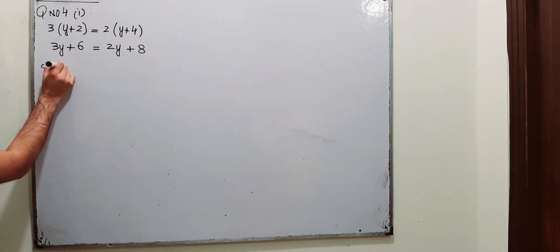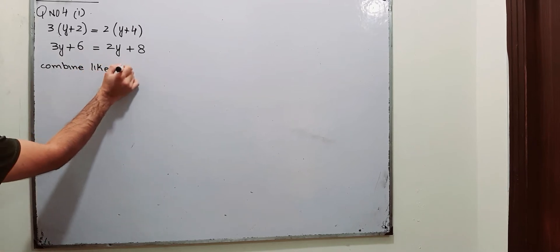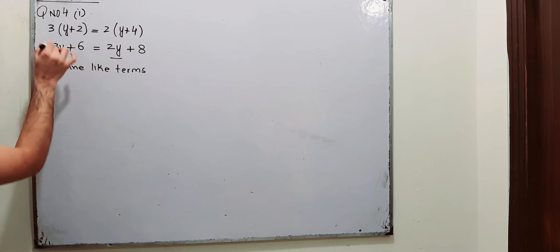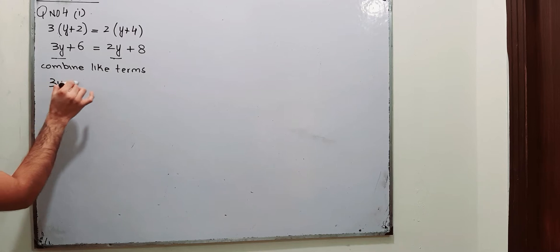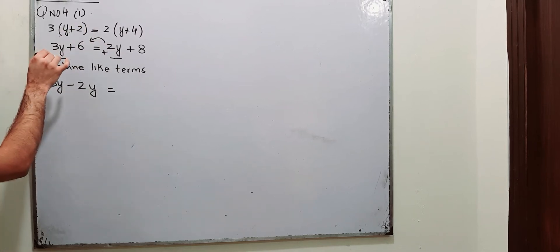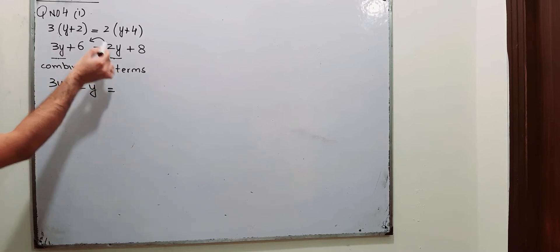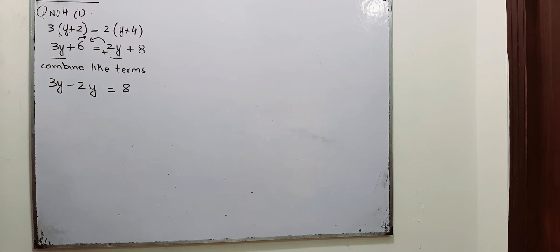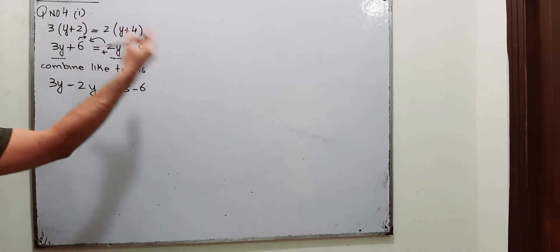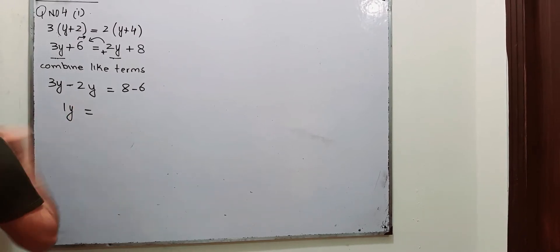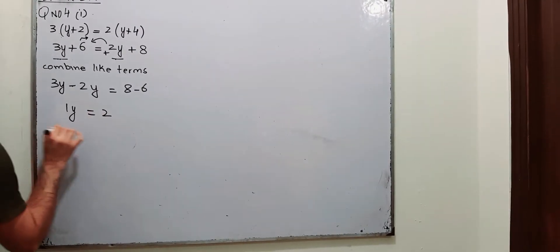The next step is to combine the like terms, which means you arrange and combine the terms involving y on one side. This was plus 2y — I have moved it to the left side of the equation towards the 3y. It changed its sign when you shift it from that side to this side of the equation. Similarly, move this 6 to the other side towards 8; it will become minus 6. So 3y minus 2y is 1y, 8 minus 6 is 2.